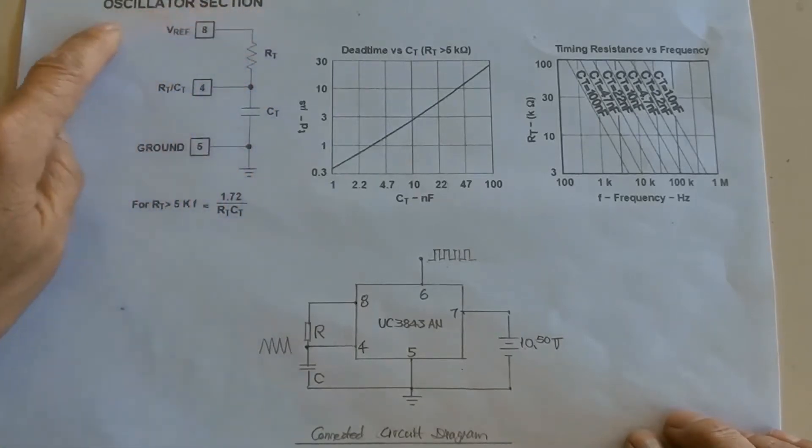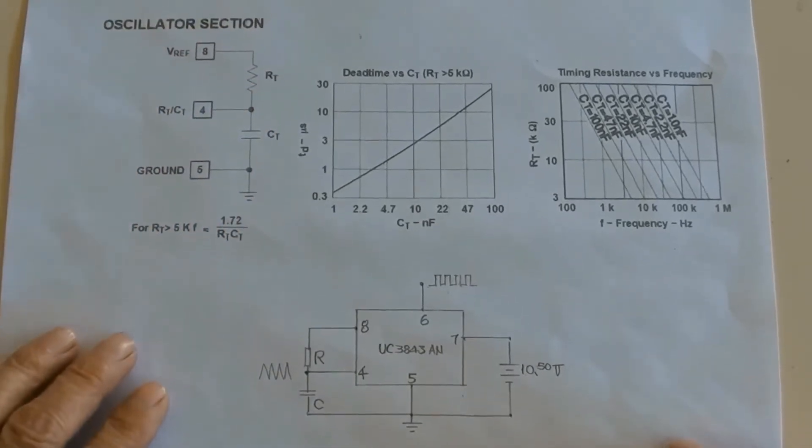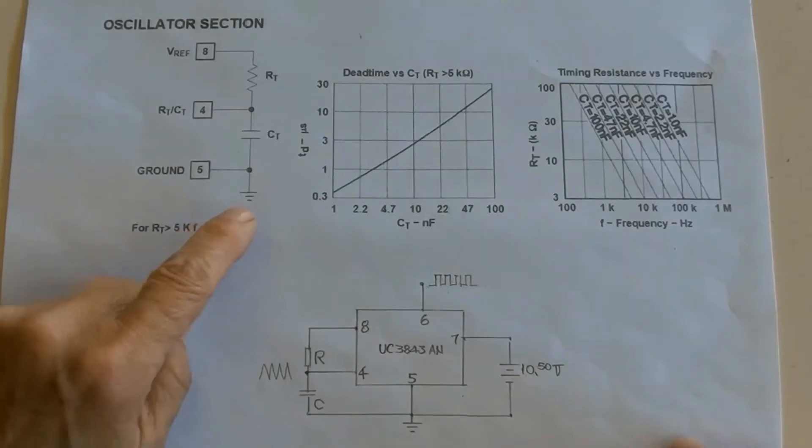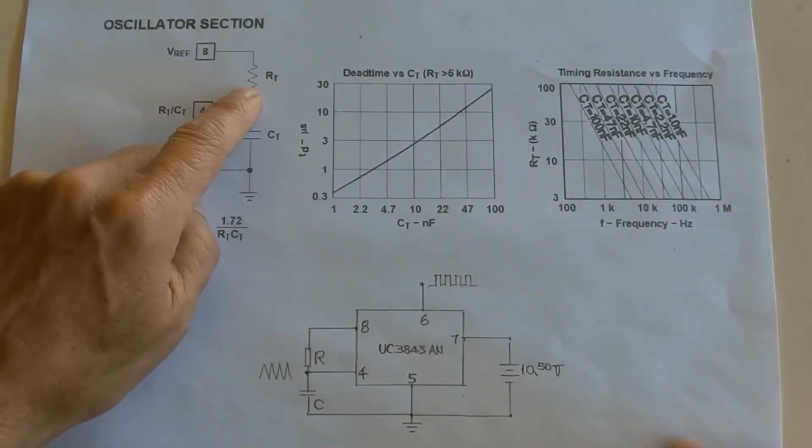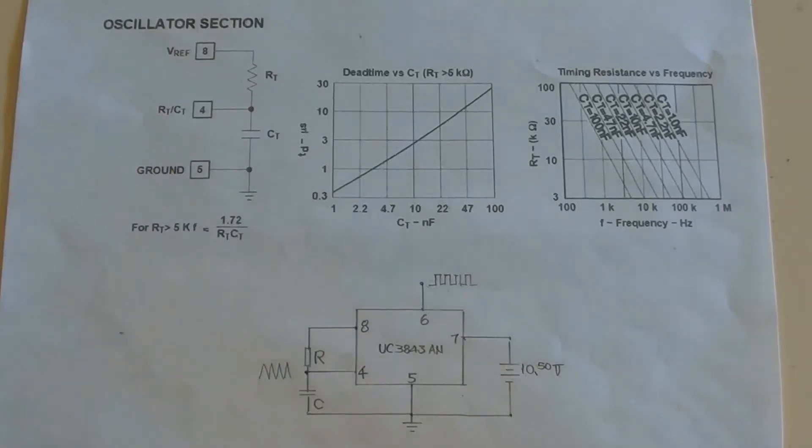This is an enlargement of R and C oscillator in the circuit from UC3843's datasheet. It also shows the terminal's connection numbers and a formula for calculation frequency.